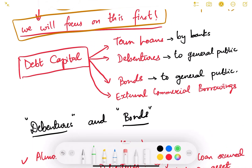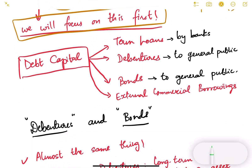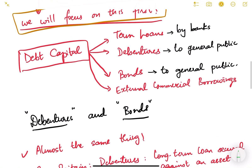Debt capital — in Hindi we call it 'karz' — is a kind of loan you take from people. This loan can be obtained in four ways.